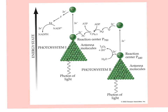Here's an energy scheme for the light reactions of photosynthesis. Both photosystem I and photosystem II require a photon of light to take electrons to a higher energy level. The electrons come from water splitting, and at higher energy they power the formation of ATP from ADP, and NADPH from NADP.